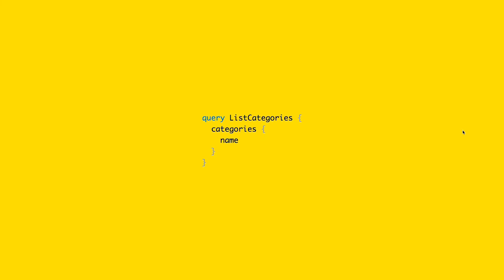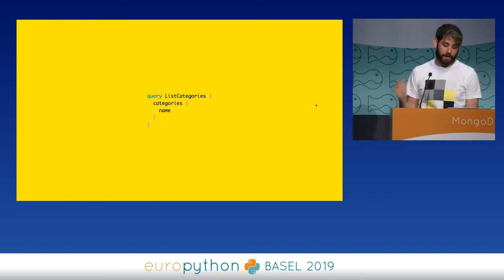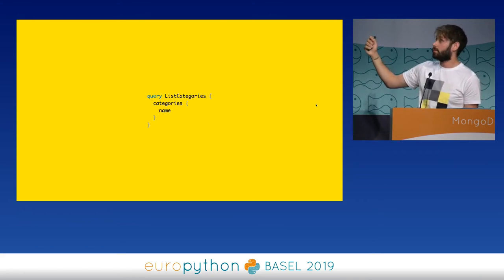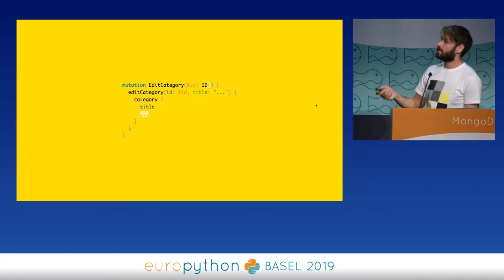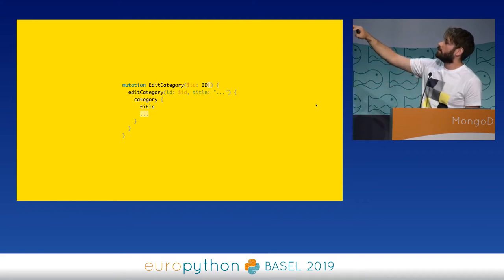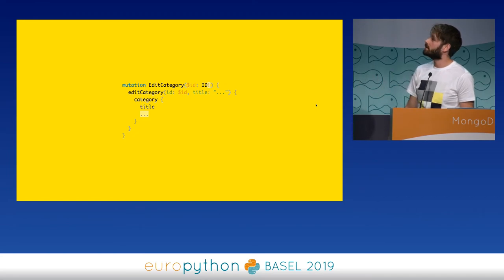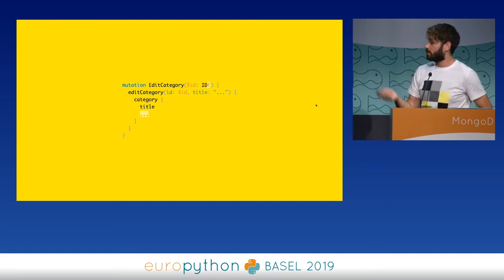I was only talking about querying. This is how you do a query in GraphQL: you can specify the operation type, which is 'query' in this case, then an operation name used only for debugging purposes — so you can have logs with all the operation names — and then specify the fields you want. If you're just doing a query, you don't have to pass the query keyword and the name. But if you want to edit data, you can use mutations, which work the same way. You have the operation type, a name, you can pass arguments, and then fetch the data back.